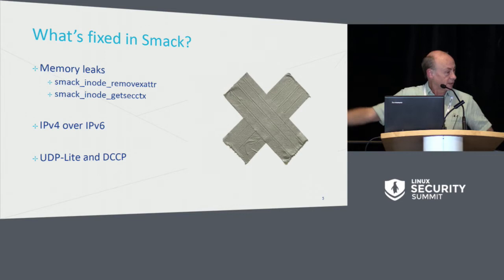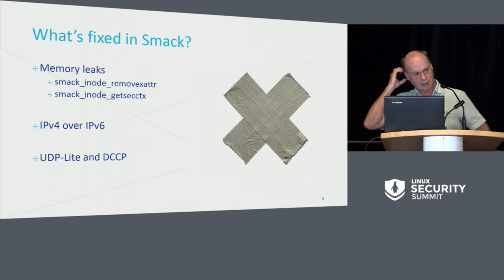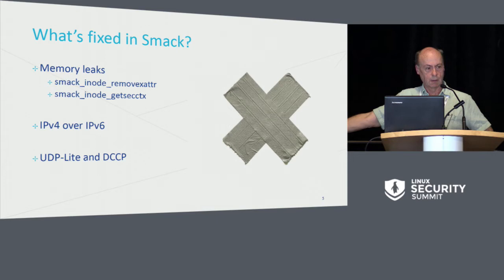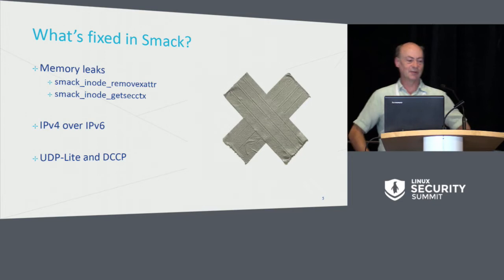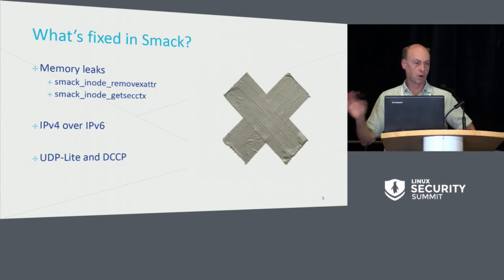We even had one case from Al Viro where Al went out and made a significant change, and he came back saying this doesn't work anymore. He actually convinced me to make a change that fixed the problem. That kind of thing happens, and it's happening enough now that we're being more proactive about checking for and detecting those kinds of regressions.